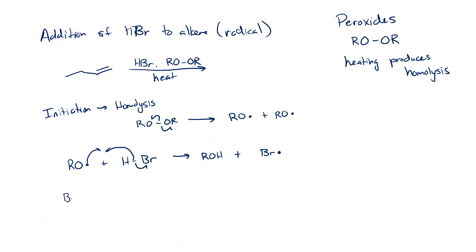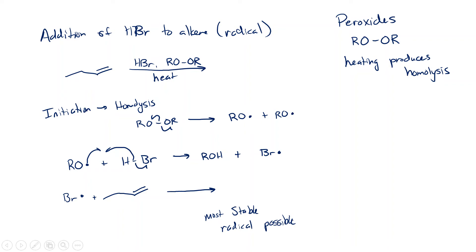That bromine radical is going to react with the double bond. This is a new step we haven't seen before. The goal here is to make a stable radical — we want to make the most stable radical possible. The most stable radical we can make is formed as we break the pi bond.